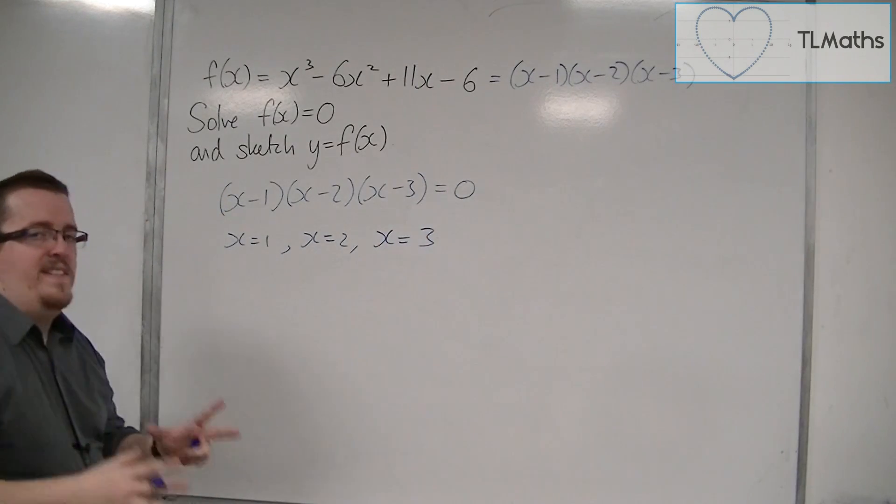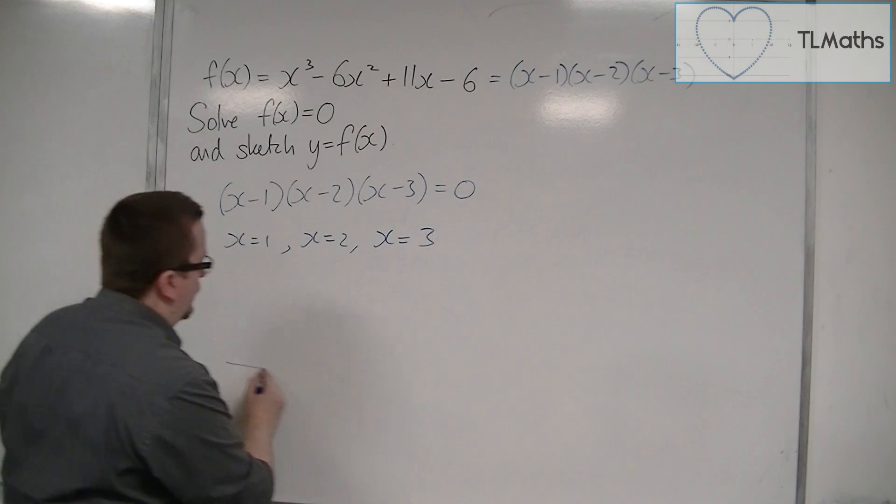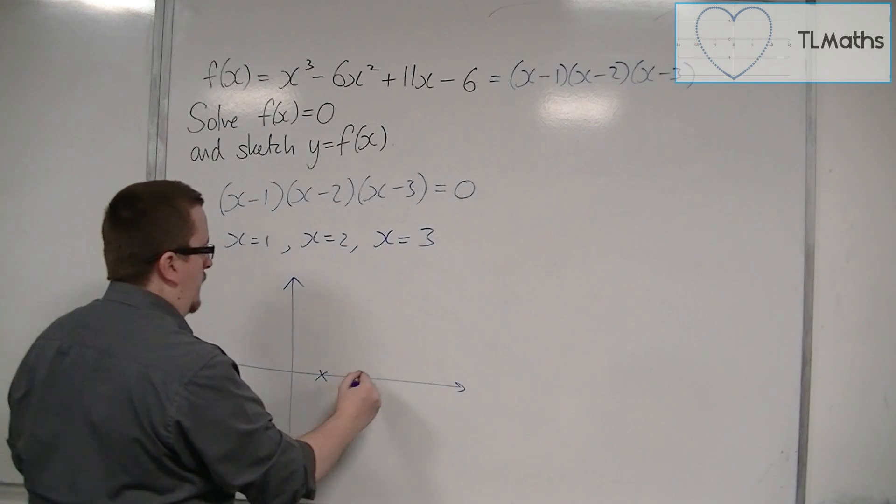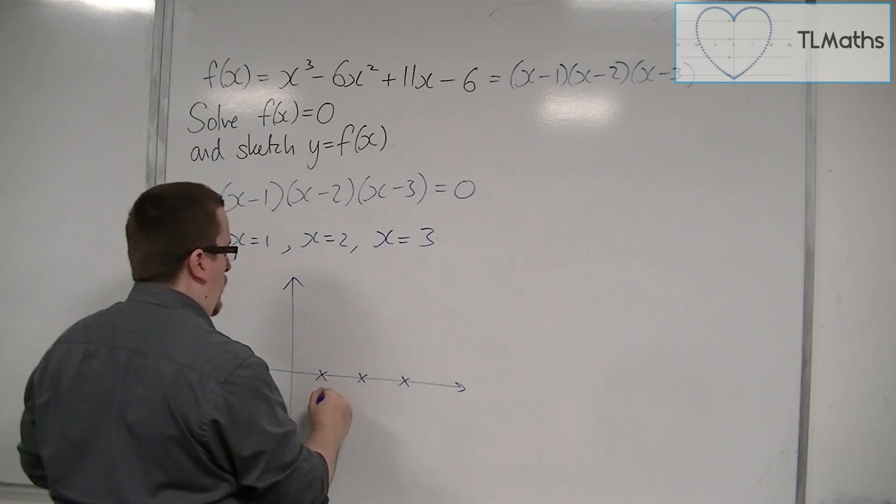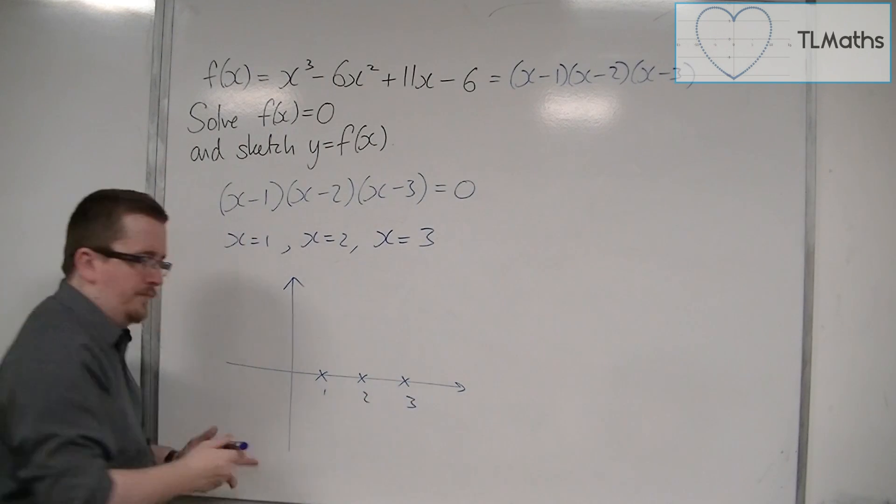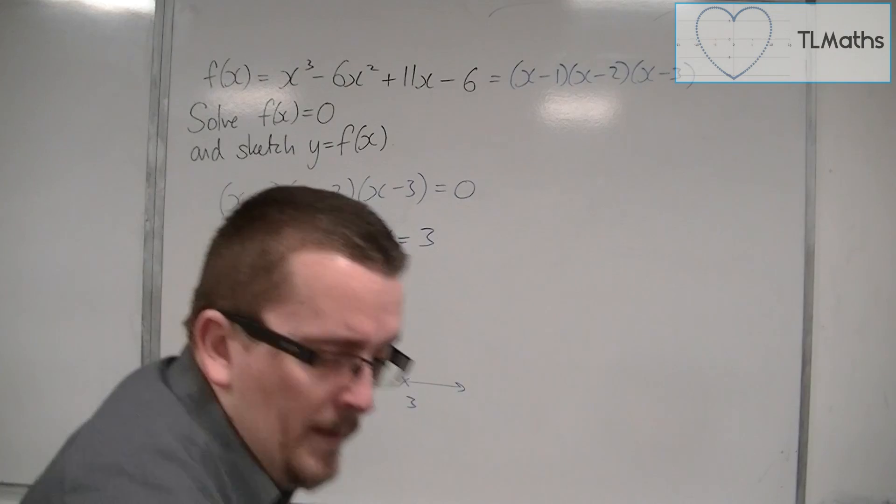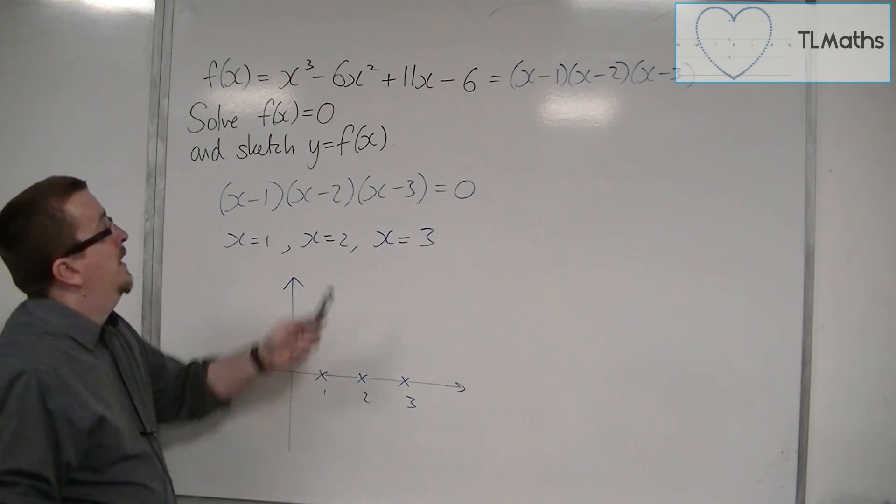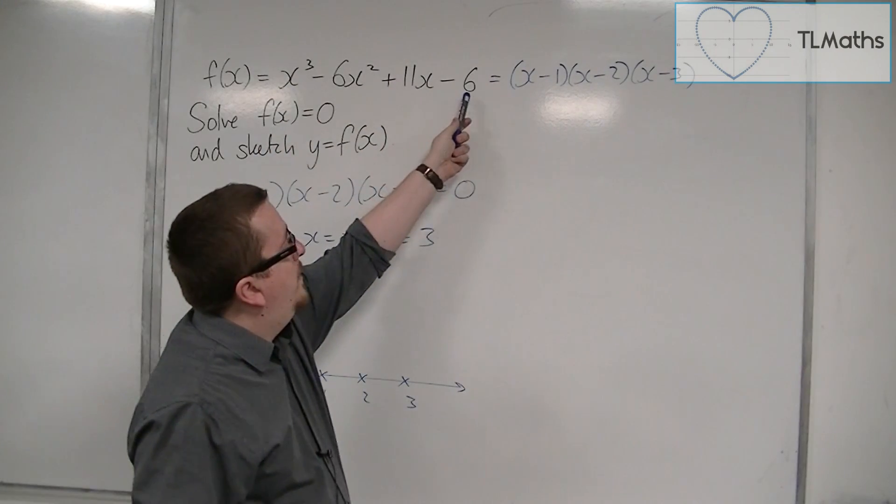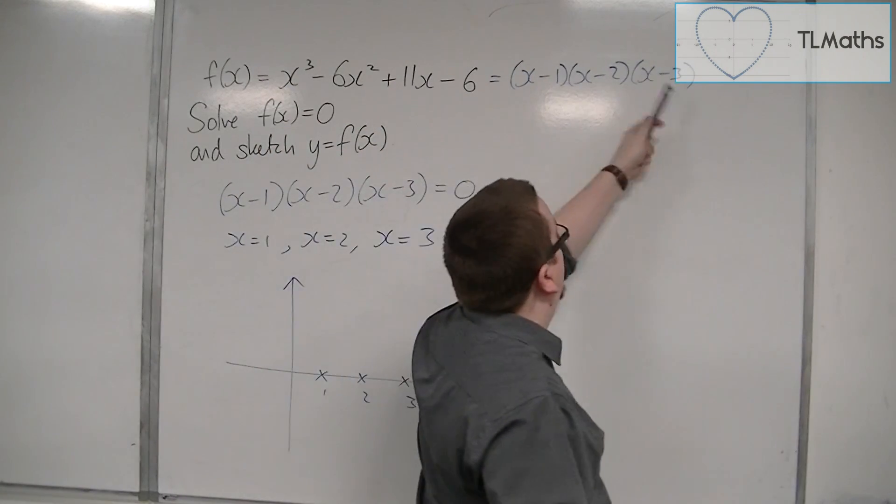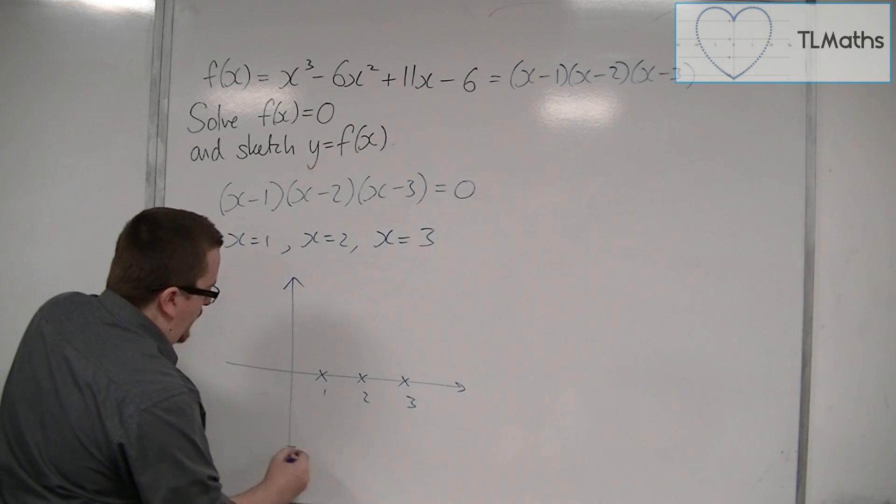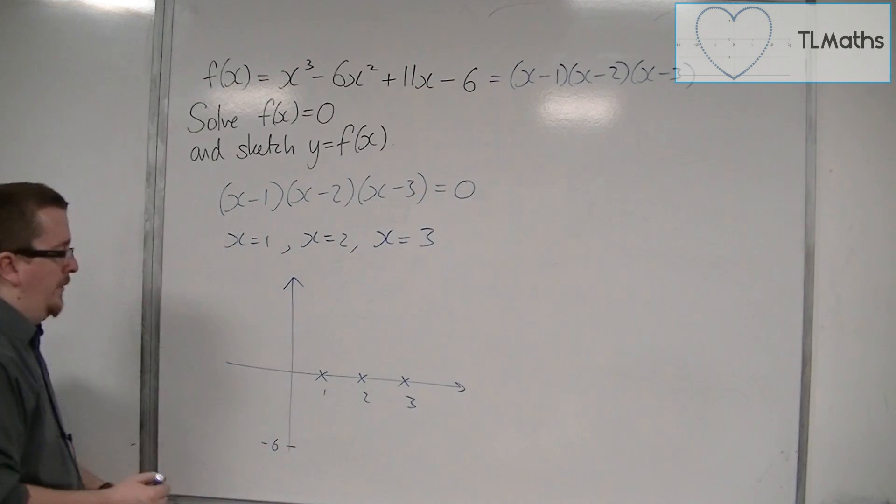And this identifies the three points where the cubic crosses the x-axis: 1, 2, and 3. Now we can also tell where it's crossing the y-axis by looking at this number here, or minus 1 times minus 2 times minus 3, which makes the minus 6. So we know that the curve must go through minus 6 on the y-axis.